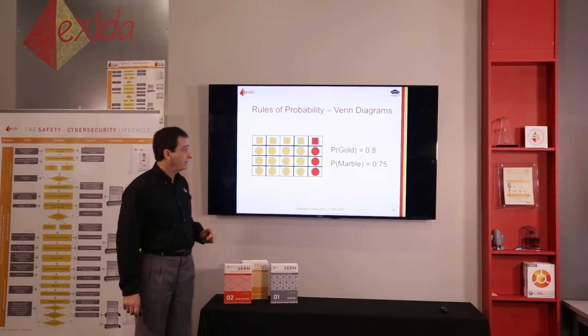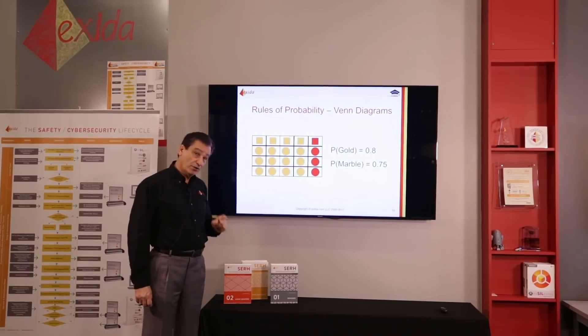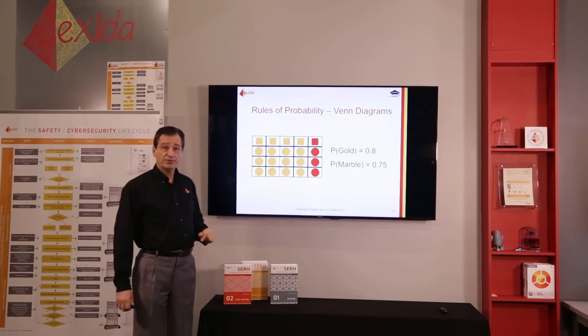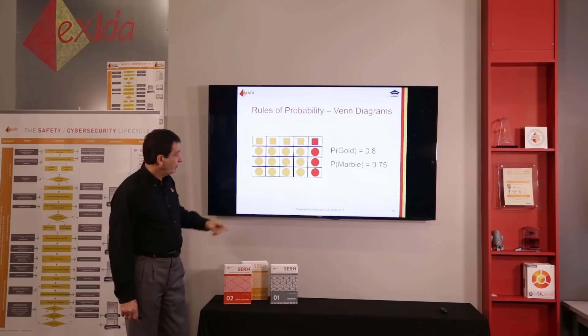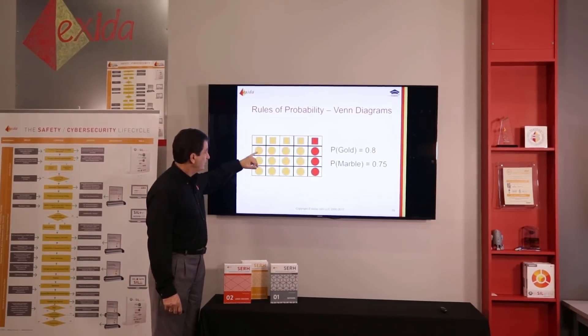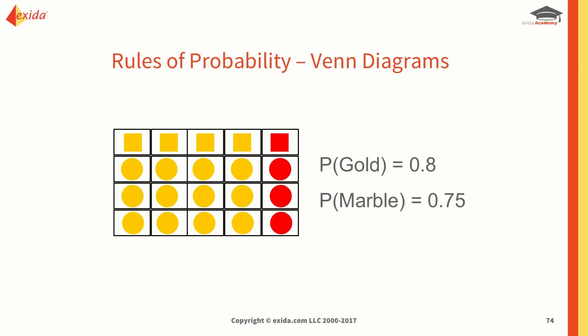If we want to figure out the probability of getting a gold marble, we could take 0.8 times 0.75, or we could count 4 times 3 giving 12 over 20, which of course is 6 over 10, or 3 over 5.